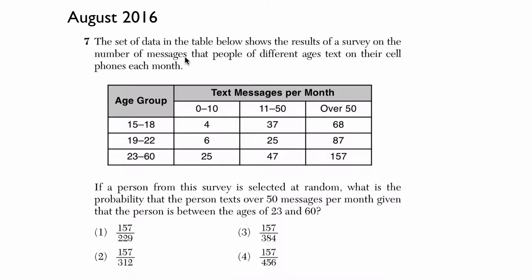So in this problem, let's read it. They say the set of data in the table below shows the results of a survey on the number of messages that people of different ages text on their cell phones each month. So let's take a moment and look at it. We've got our age groups: 15 through 18, 19 through 22, and 23 through 60. And then over here we have different amounts of text messages per month: 0 through 10, 11 through 50, and over 50.